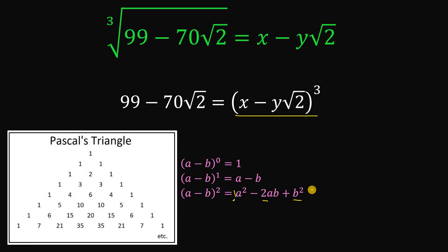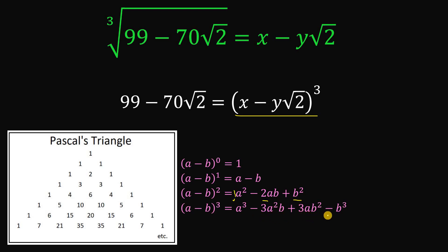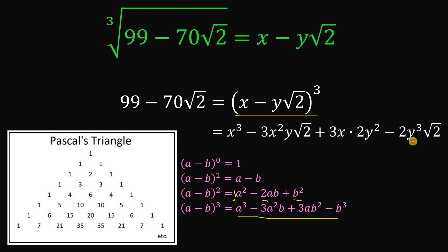For (a minus b) raised to the third power, we have: a cubed minus 3a²b plus 3ab² minus b cubed. Using this, we can now expand (x minus y times square root of 2) raised to the power of 3, and if we do that we get this expansion.